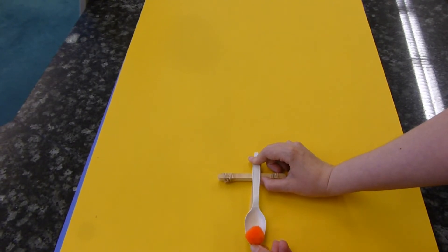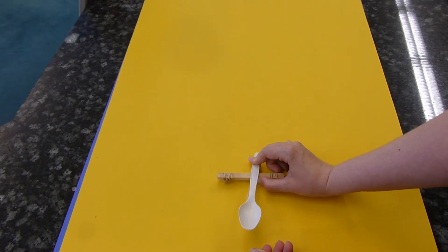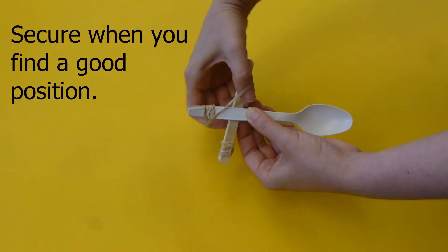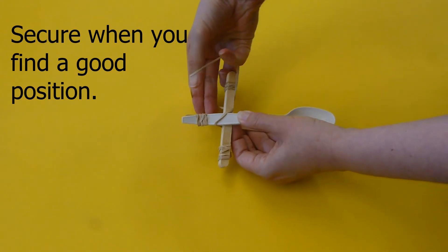Try moving your fulcrum into different positions to see how it affects the distance you can get on your catapult. Once you've found your perfect position, you can secure your fulcrum in place by using another rubber band.